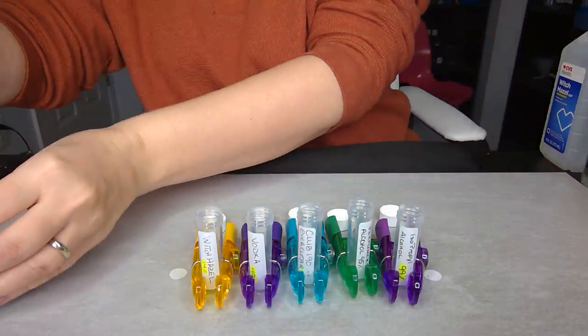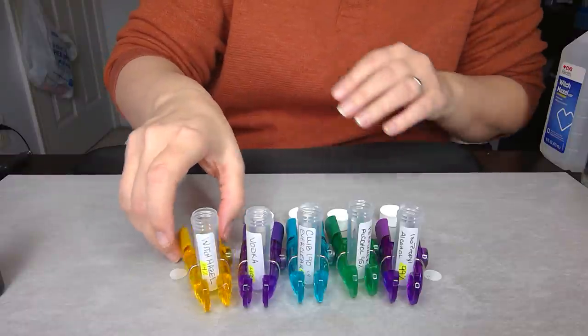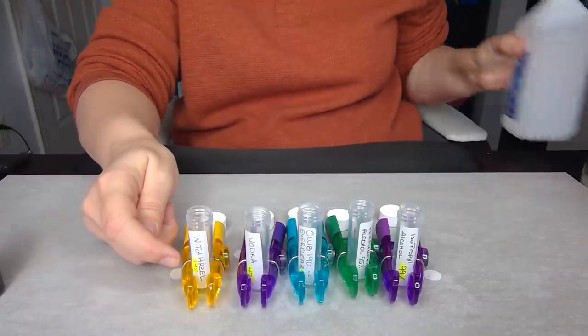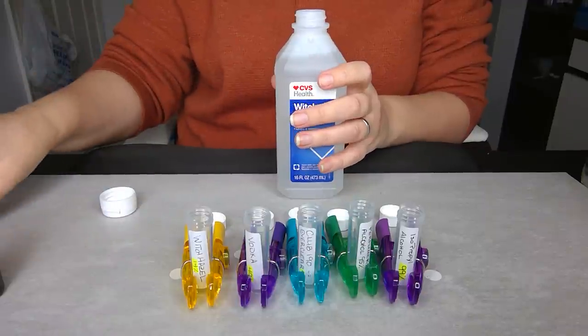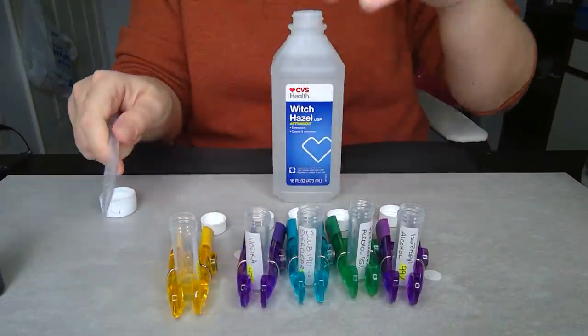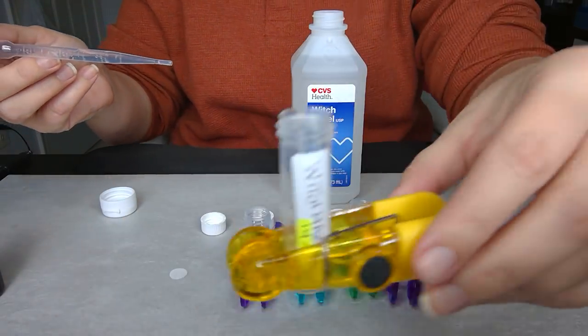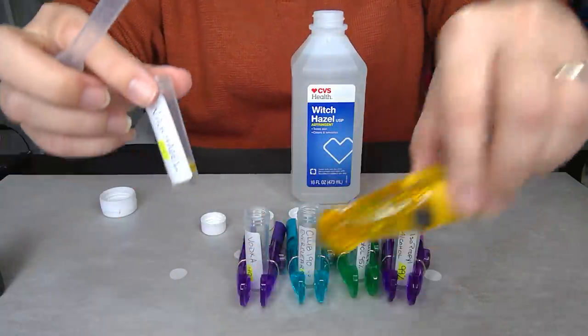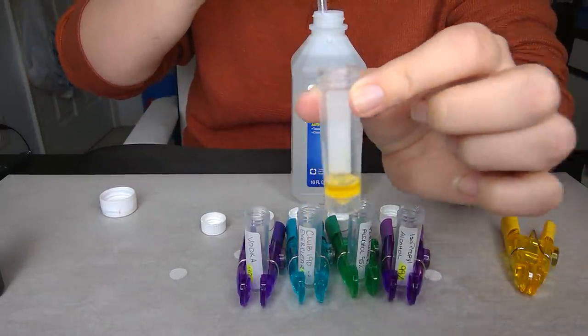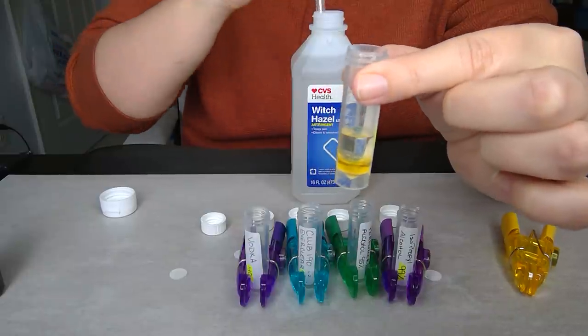All right, so that one is for the witch hazel. Notice that I have highlighted this - it tells you that there's only 14% alcohol in the witch hazel. So with that being said, now we're going to take witch hazel and add it to a four ratio. We're doing the one to four, so there's your one mL, we're going to take it up to the five. All right, and watch what happens. Let me see if I can get closer so you can see. Let's see what happens as we go up to that five mark.